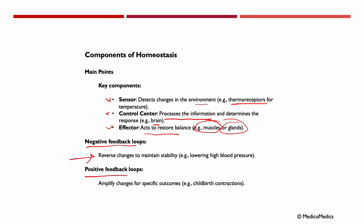Negative feedback loops reverse changes to maintain stability. For example, if there is an increase in blood pressure, systems are in place where the body gets alerted to this rise and sets into motion changes to reverse it and reach a stable level. When these natural feedback loops don't function as they're supposed to, this is when we can start talking about the development of pathologies, and we may need to assist the patient with medication.